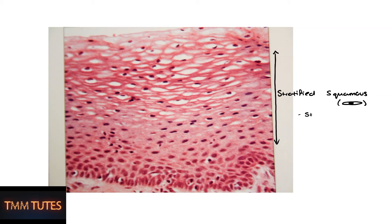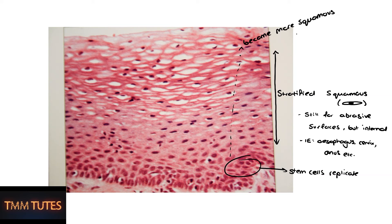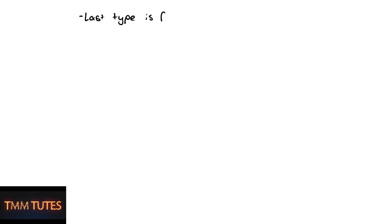Here we have the stratified squamous epithelium mentioned before, but this time it has no keratin — non-keratinized stratified squamous. It has many layers. Notice at the bottom the cells are more circular, and as they extend toward the top they become flatter and more squamous. This is still for abrasive surfaces but found internally — for example the esophagus, cervix, or anus — places that have to deal with rough objects passing through.